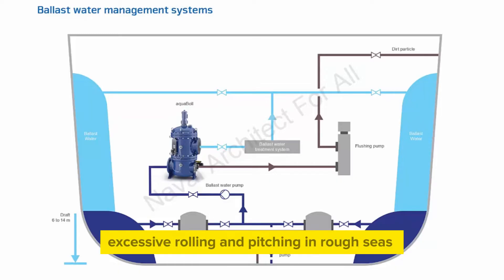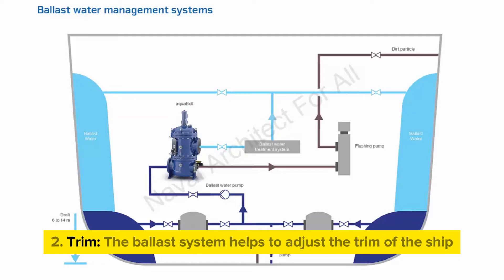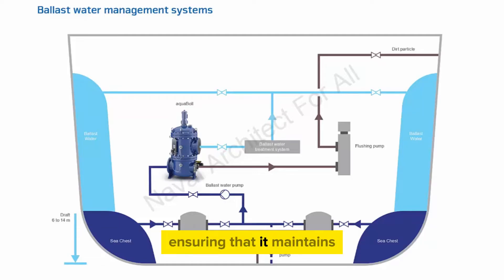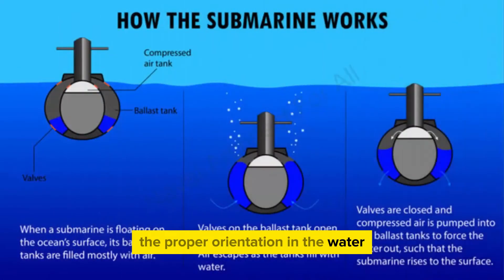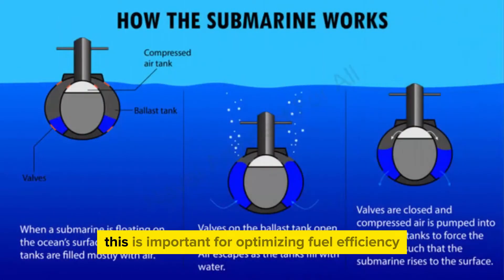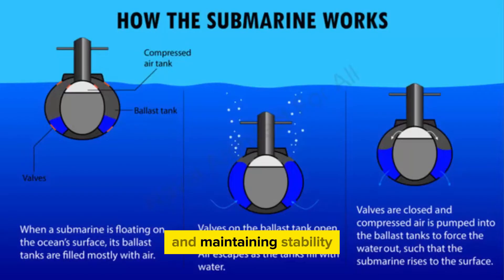Trim: the ballast system helps to adjust the trim of the ship, ensuring that it maintains the proper orientation in the water. This is important for optimizing fuel efficiency and maintaining stability.